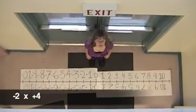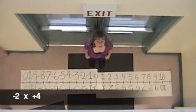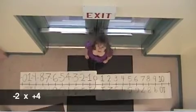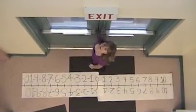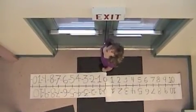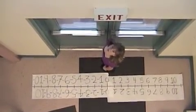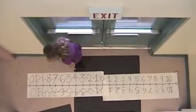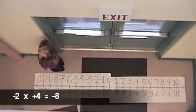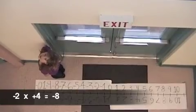Negative 2 times positive 4. The first number tells me to face the negative direction, and the second number tells me to move forward because it's positive. I moved 4 lines negative 2 times. Now I'm on negative 8, so that's the answer.